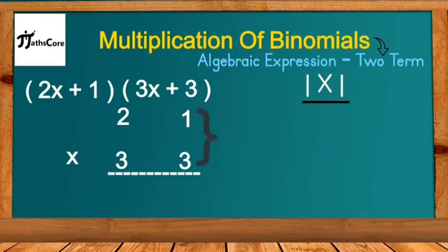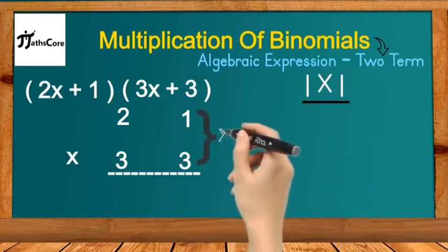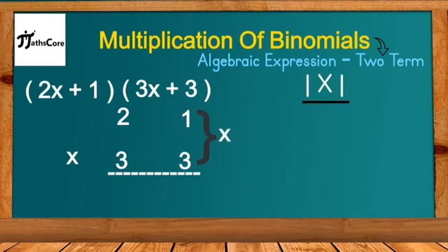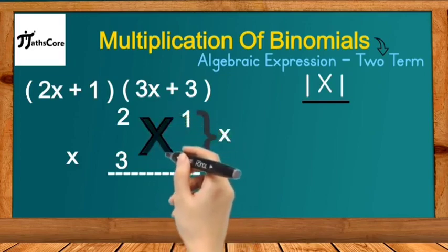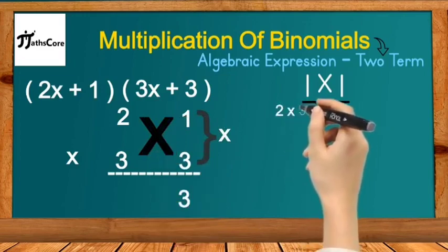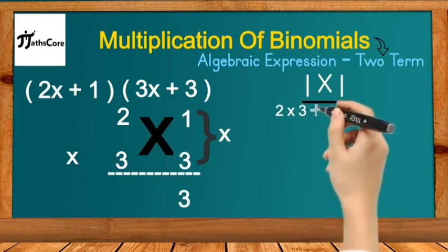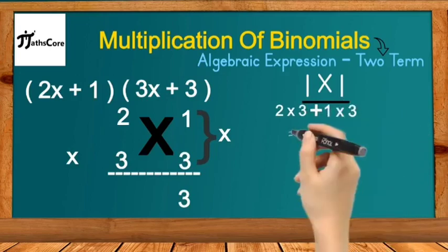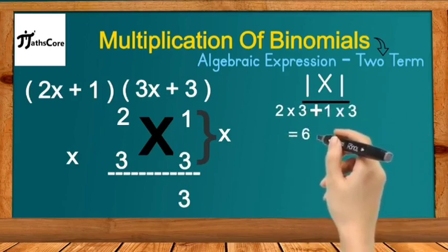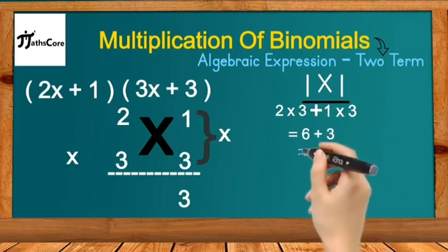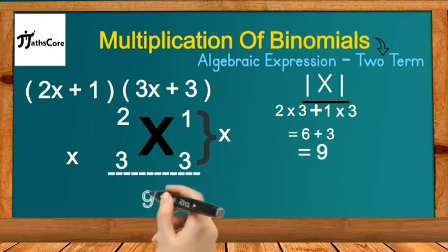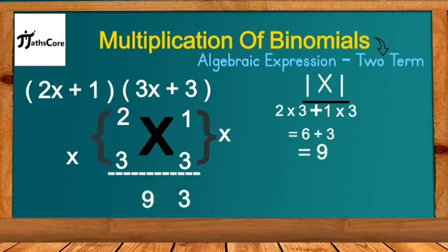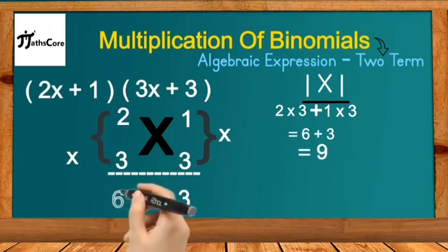We will use the Vedic math concept of ixi. First, multiply the unit place numbers: 1 multiplied by 3 is 3. Next, do cross multiplication and addition of unit and tens place numbers: 2×3 + 1×3 = 6 + 3 = 9. Write down 9 in the middle. Then multiply the tens place numbers together: 2 multiplied by 3 is 6. So we get the number 6, 9, 3.